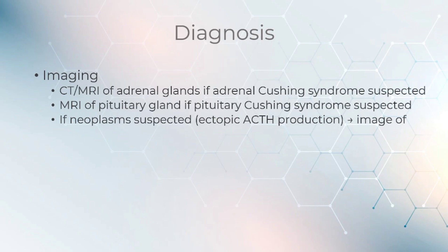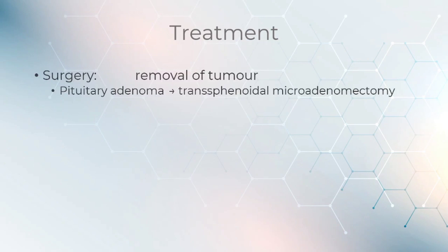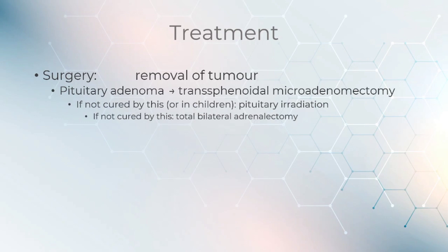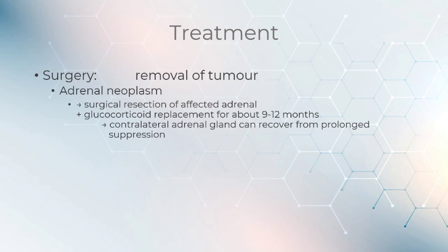If neoplasm is suspected, imaging of the lung, pancreas, kidney, thyroid, and thymus is needed. Treatment is performed by surgery to remove the tumor. Pituitary adenoma undergoes trans-sphenoidal microadenomectomy. If not cured, or in children, pituitary irradiation can be used; if still not cured, total bilateral adrenalectomy is performed. Adrenal neoplasm requires surgical resection of the affected adrenal, plus glucocorticoid replacement for about 9–12 months so the contralateral adrenal gland can recover from prolonged suppression.